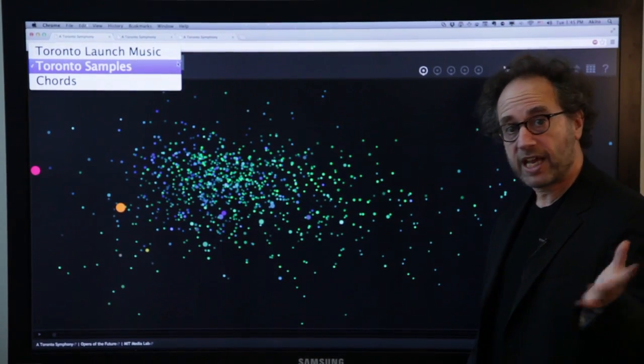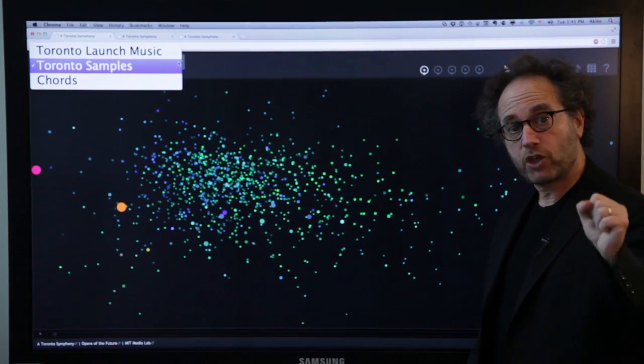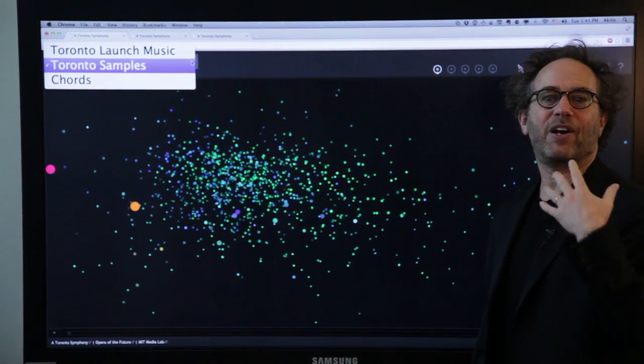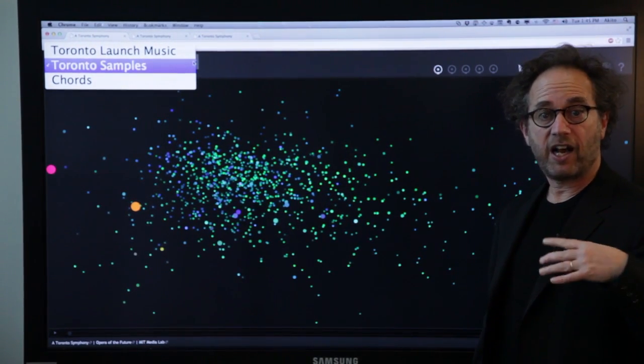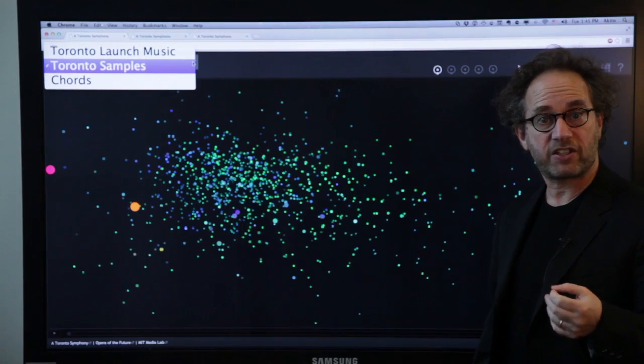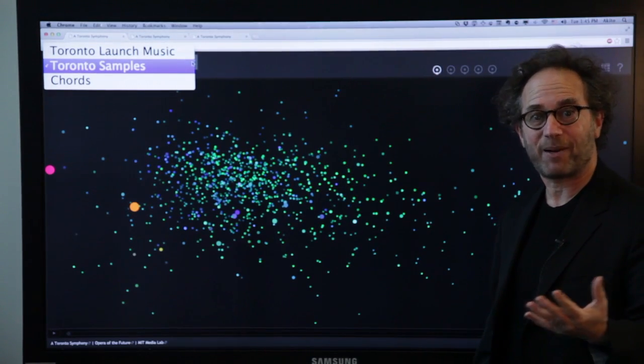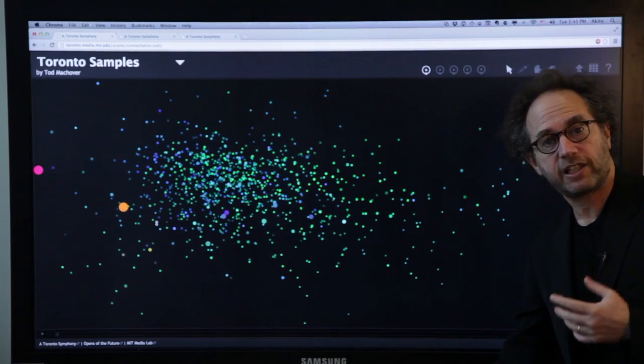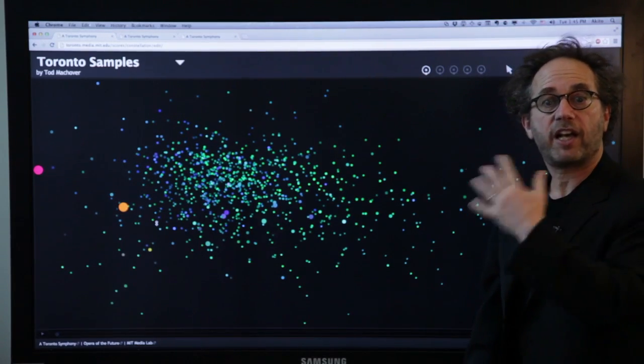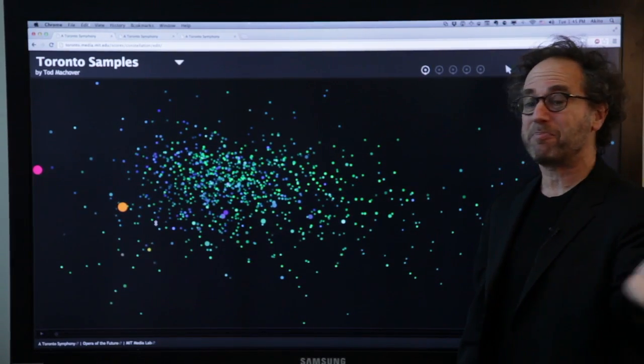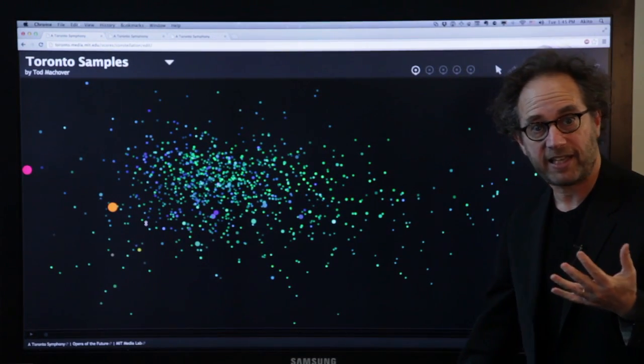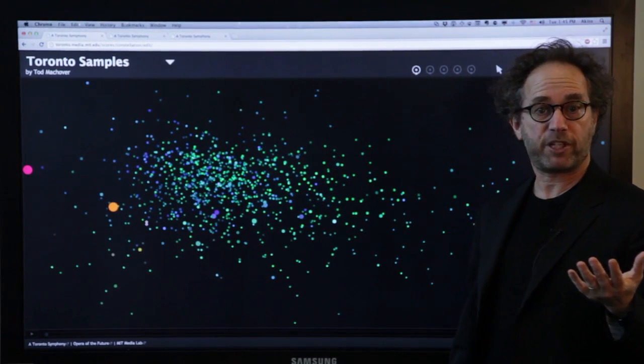One are samples, sounds from around the city, chords, the main chords of the piece, and launch music, which is an instrumental performance of the main materials of the piece that we've mixed up, mashed up, that you can make your own version of. So let's look at the samples first. Each of these little dots is one sound. Aikido software takes masses of sound, analyzes them, and breaks them up into little bits automatically, and it organizes them according to different principles.